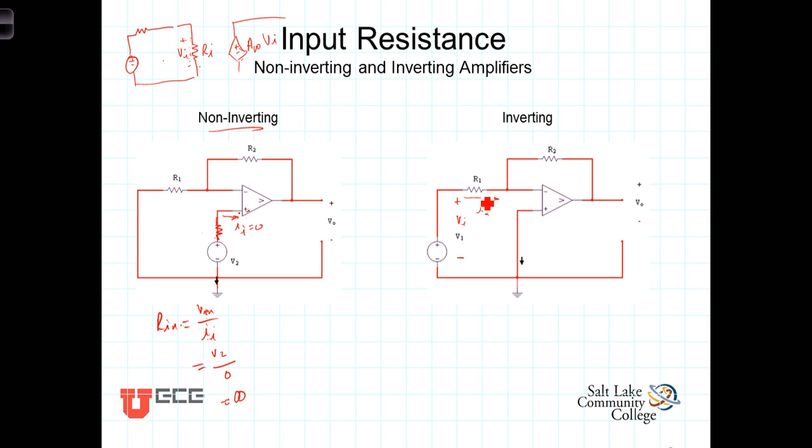But because this doesn't go directly and solely into the inverting terminal, because there's this path, IN is not zero. Rather, IN is equal to VIN, or V1, divided by R1.